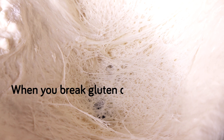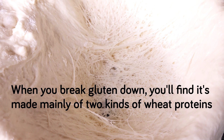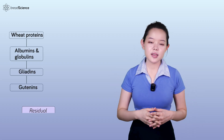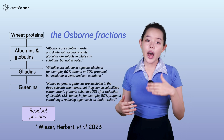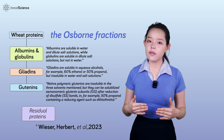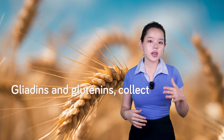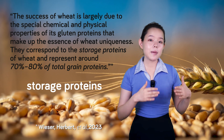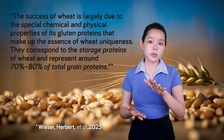When you break gluten down, you'll find it's made mainly of two kinds of wheat proteins: gliadin and glutenin. Traditionally, there are four fractions of wheat proteins classified based on their solubility, known as the Osborne fractions — albumins, globulins, gliadins, and glutenins. But for this video, we mainly focus on those last two fractions. Gliadins and glutenins, collectively known as gluten proteins, are the storage proteins of wheat grains. Together, they make up approximately 70 to 80 percent of the total grain proteins.